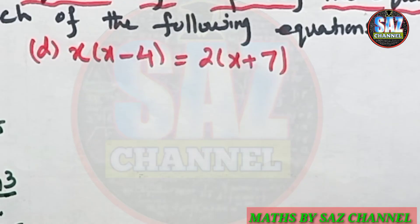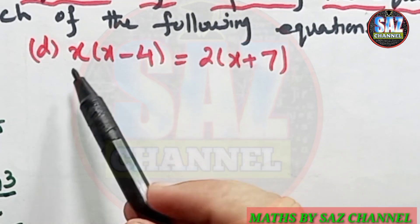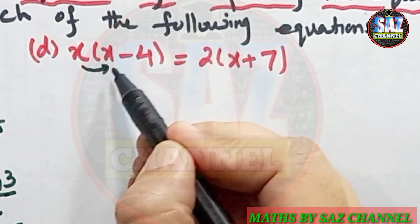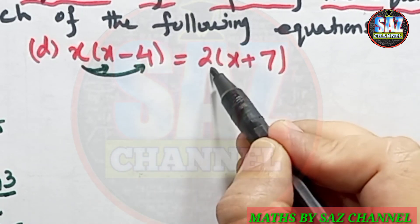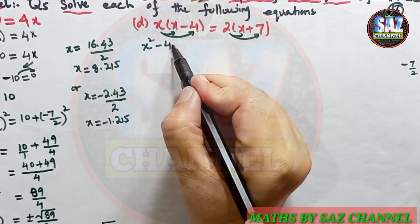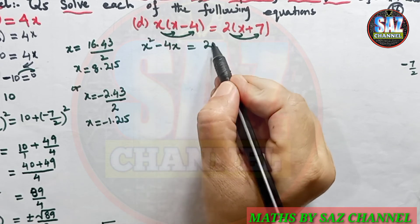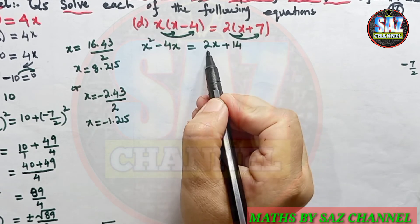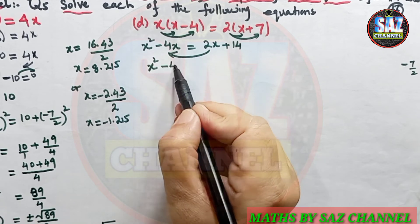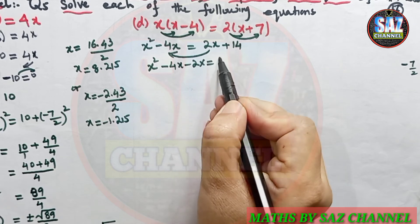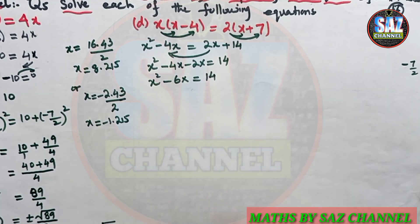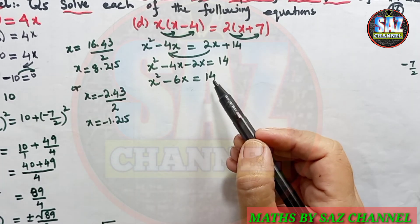I hope you are clear about that question. Let's move to part D: x(x − 4) = 2(x + 7). First, form the quadratic equation by multiplying x and 2 with every term inside the brackets. The equation becomes x² − 4x = 2x + 14. I shift 2x to the left side: x² − 4x − 2x = 14, which simplifies to x² − 6x = 14. The constant 14 stays on the right-hand side as required for completing the square.